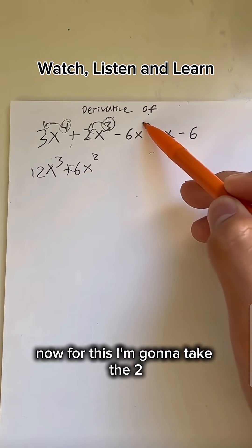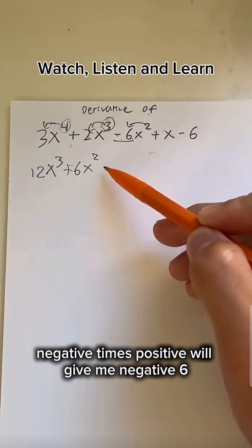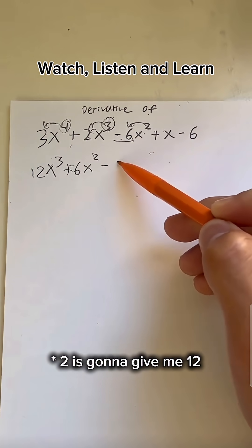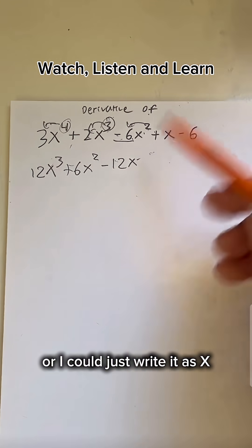Now, for this, I'm going to take the 2, and instead of multiplying it by the 6, I'm going to multiply it by the negative 6. Negative times positive will give me negative. 6 times 2 is going to give me 12. And minus 1 off that, give me x to the first power, or I could just write it as x.